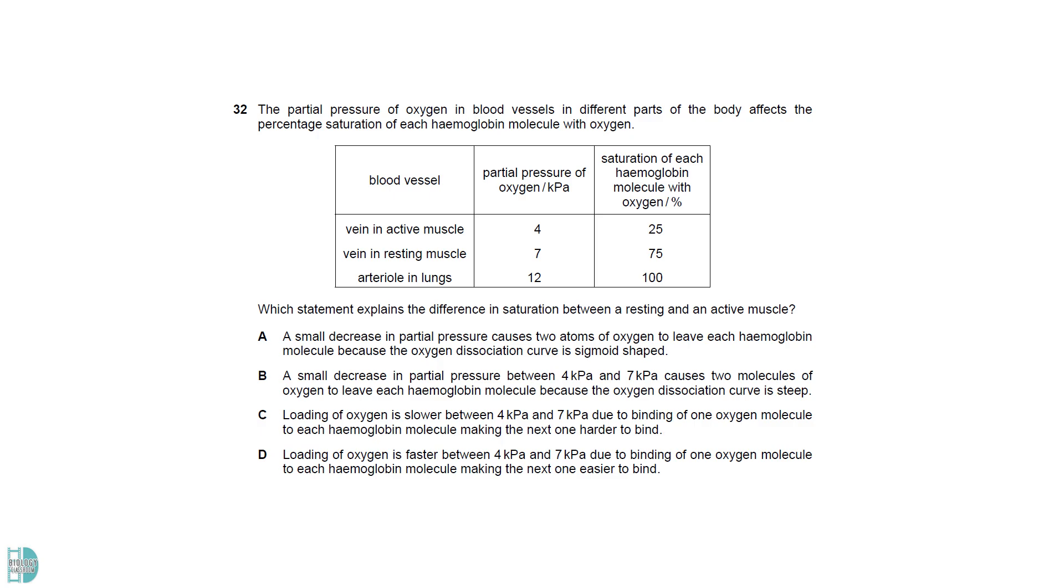You have to interpret the percentage saturation to get the answer correctly. 100% means that all haemoglobin has four oxygen molecules binding with them. 75% and 25% means that most haemoglobin molecules bind with three and one oxygen molecules. When the partial pressure of oxygen decreases from 7 to 4 kPa, haemoglobin dissociates two oxygen molecules.